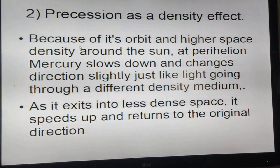Because of its orbit and the higher space density around the sun, at perihelion Mercury slows down and changes direction slightly, just like light did when it went through different density medium. As it comes out from more dense space to less dense space, it changes back to the same speed in the same direction, but it's offset.